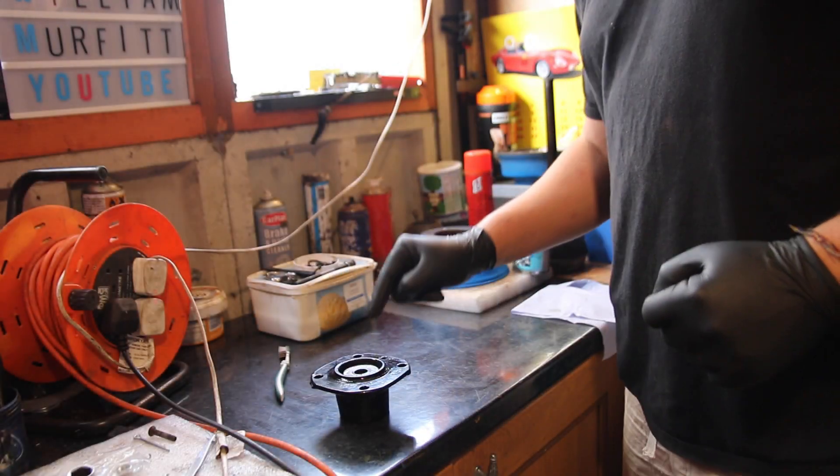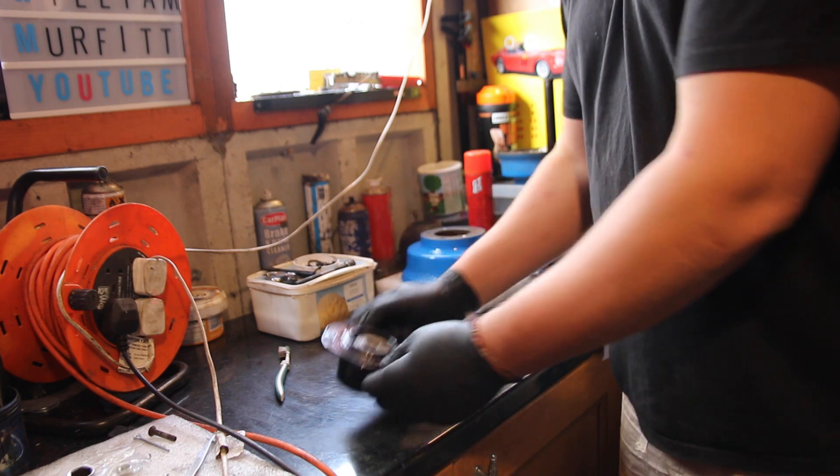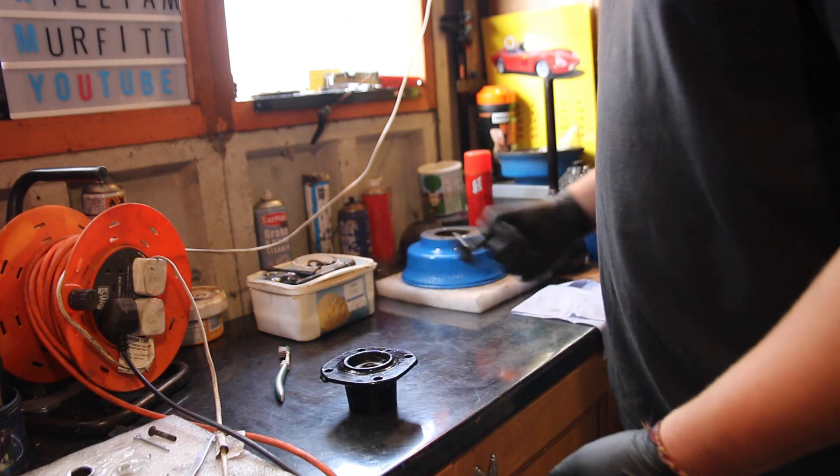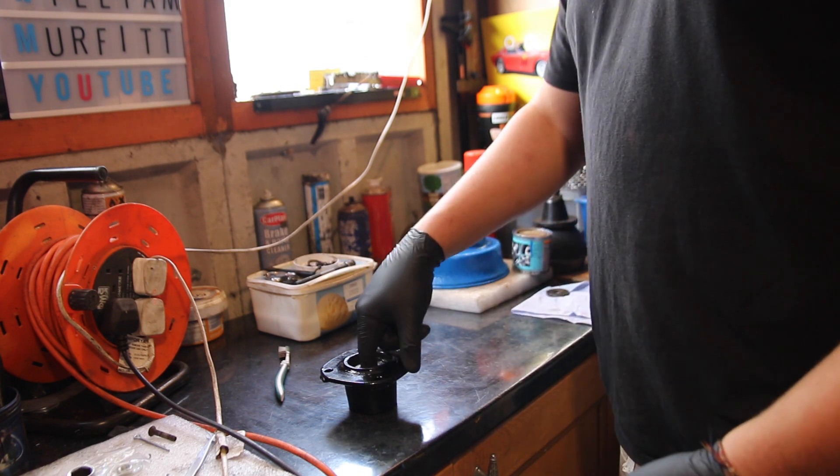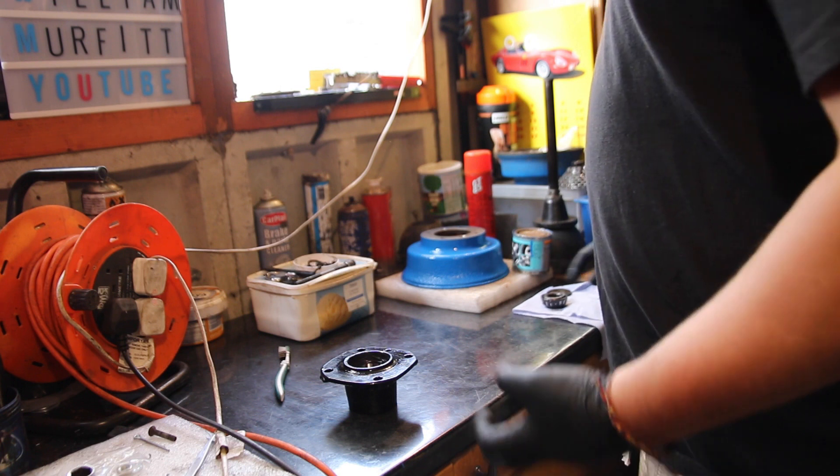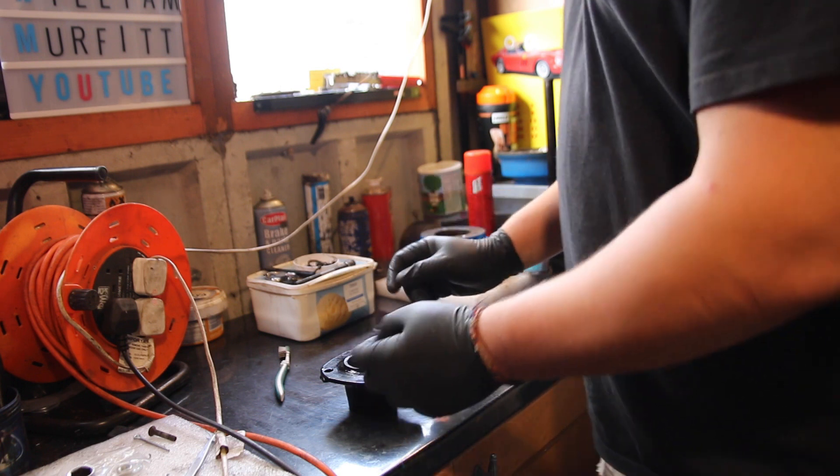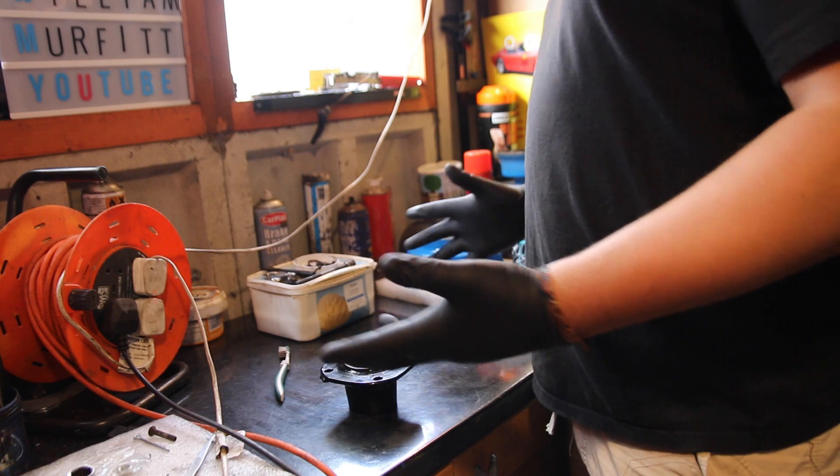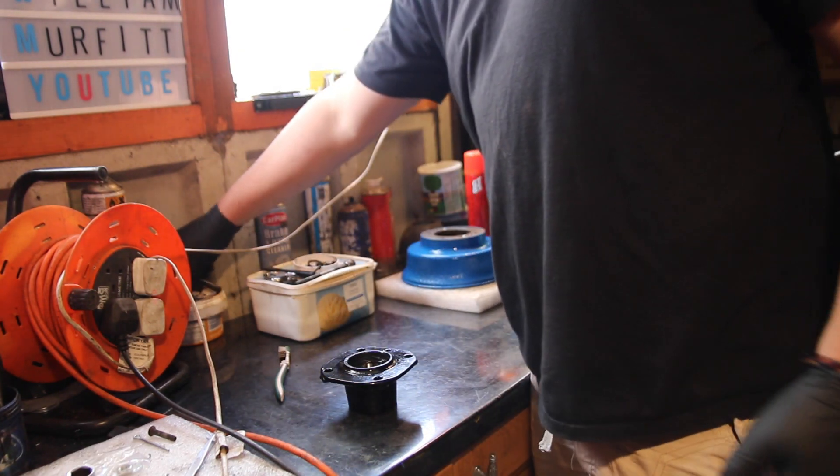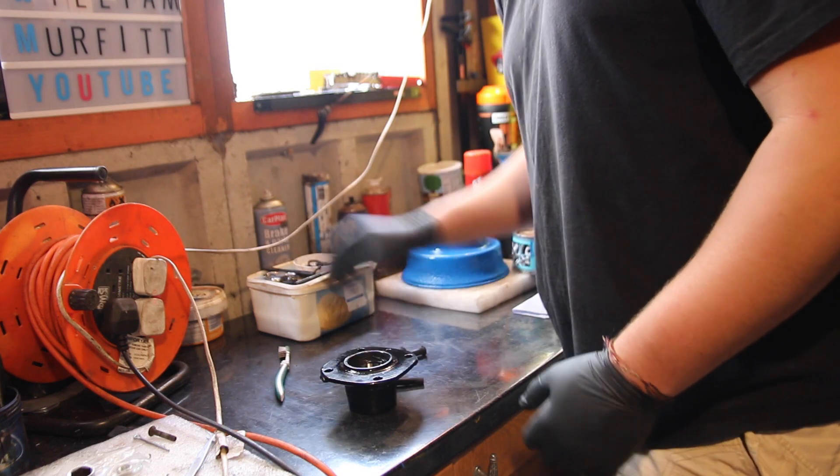Okay, so next I'm going to fit the studs to here. I've taken the hub back off of the radius arm. I'm just going to take the washer and the outer bearing back out just so it doesn't fall out, and what I'm going to do is get my four studs.